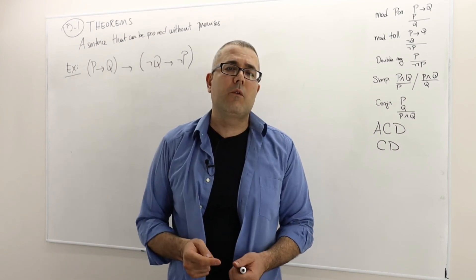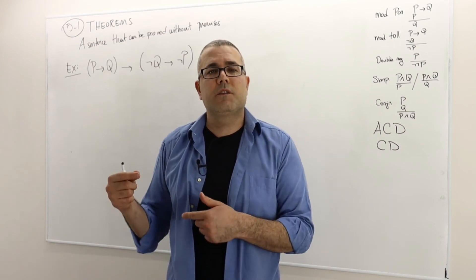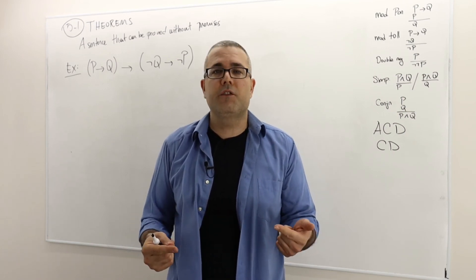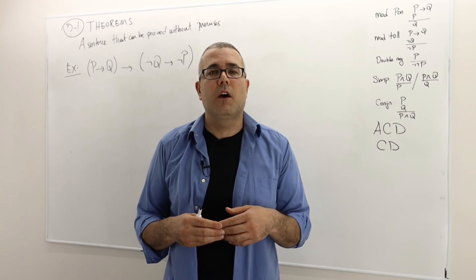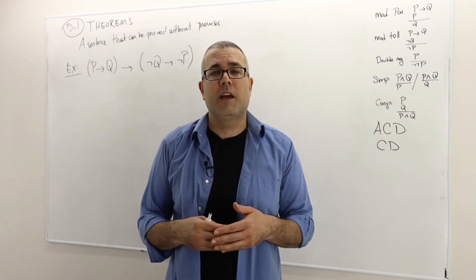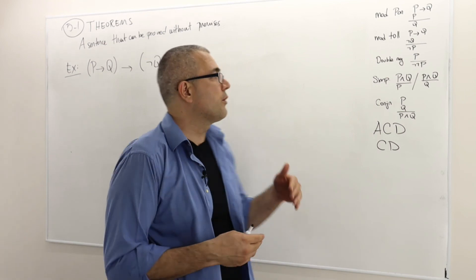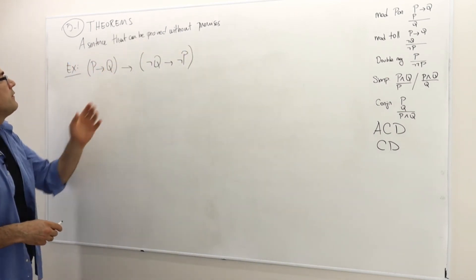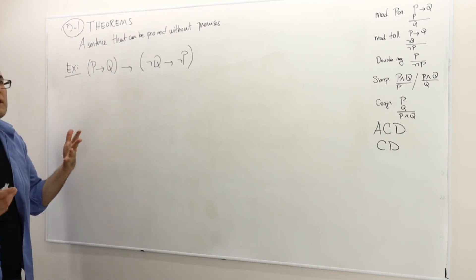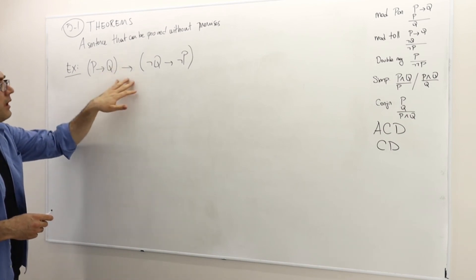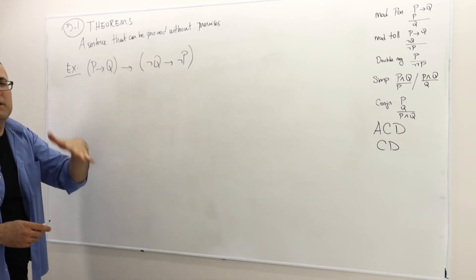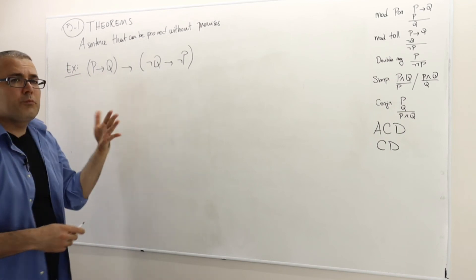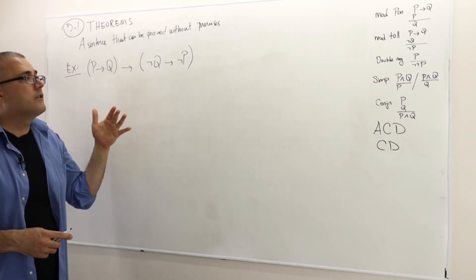Now we are in a subsection of section 5: Theorems. Conditional derivations actually help us prove arguments or sentences that have no premise. Consider the following sentence: P implies Q implies not Q implies not P. This is sometimes called the contrapositive property. There is no premise, just the conclusion. So how do we prove it?